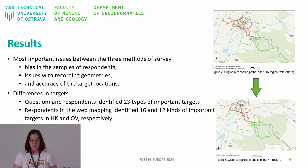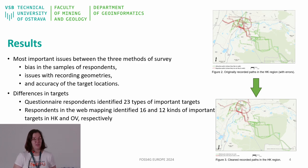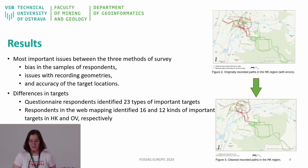Questionnaire respondents identified 23 types of important targets, whereas web mapping respondents identified 16 and 12 kinds of important targets in Hradec Králové and Ostrava respectively. This shows variance in perception and highlights the importance of method selection.